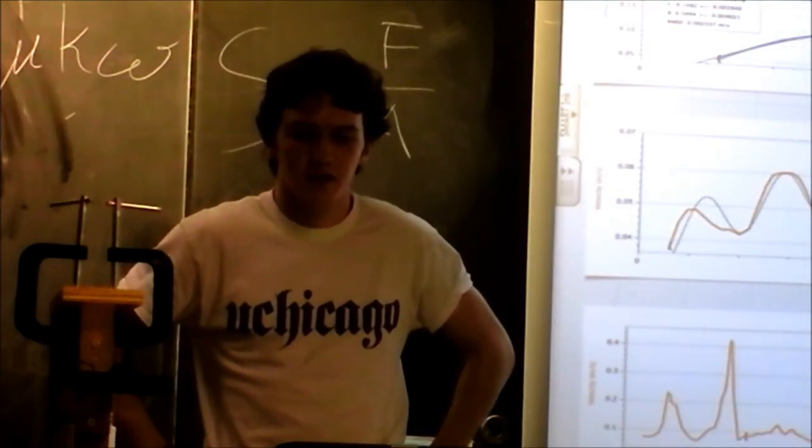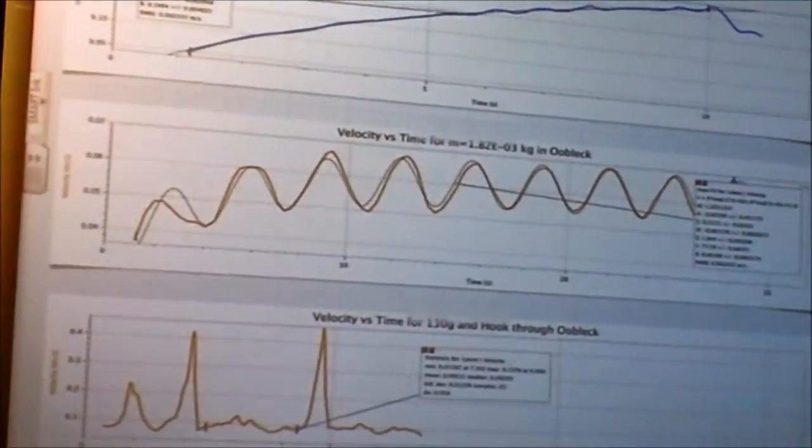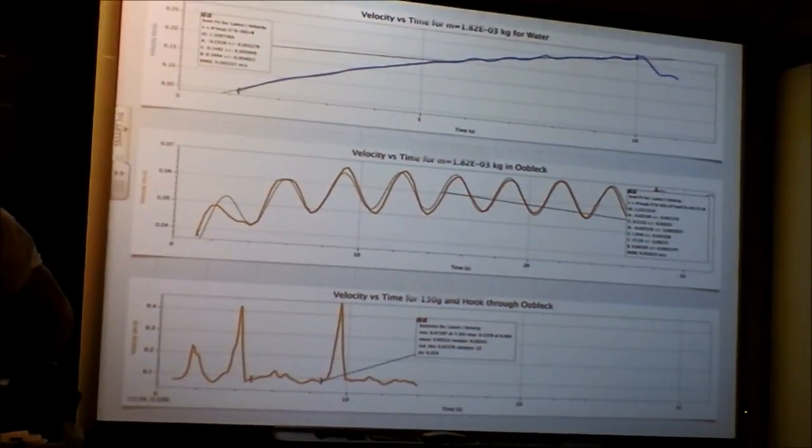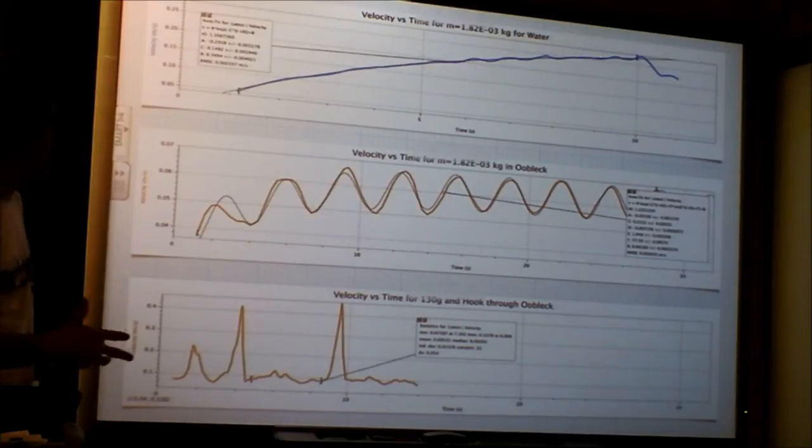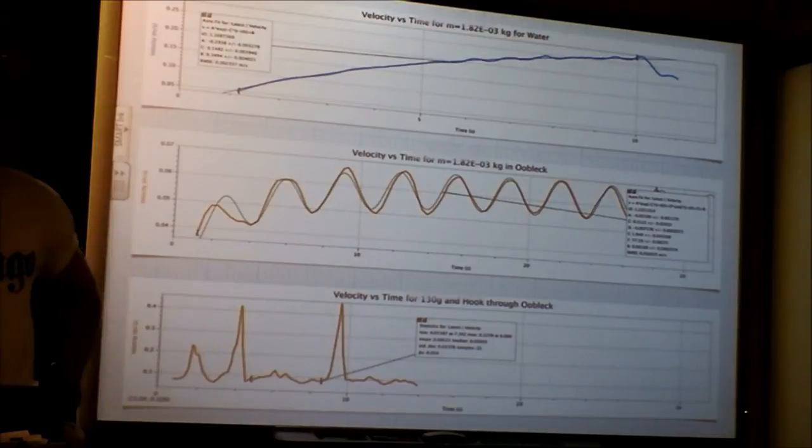And this is the data that I took. So first I tested water with this. And that was to determine the geometry constant, c. So c was equal to all that stuff, if you remember, divided by the viscosity. Alright? And so I have a bunch of trials for c. And I basically, since water wasn't very viscous, it didn't actually approach its terminal velocity.